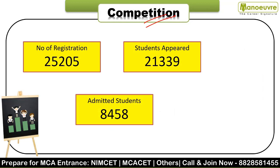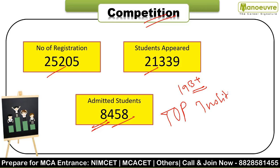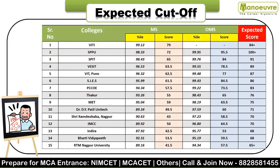Regarding competition: 25,205 candidates registered for MCA-CET. Out of that, 21,339 appeared for the exam. There are 193 plus colleges, but only 8,458 students got admitted - not because they didn't score enough, but because the race for top institutes is fierce. Those who didn't get top institutes switched their program, which is why cut-offs for top institutes remain high.